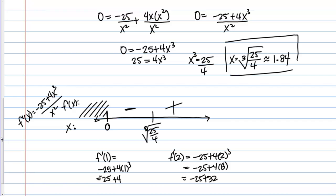So what does that tell us? If we think about what that tells us about behavior of f(x), we're decreasing to the left of this critical point, and then we're increasing. So this tells us that x = ∛(25/4) is the location of a local minimum.